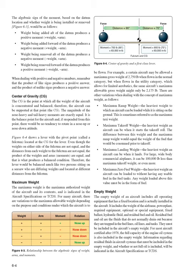Empty Weight: The empty weight of an aircraft includes all operating equipment that has a fixed location and is actually installed in the aircraft—the airframe, power plant, required equipment, optional equipment, fixed ballast, hydraulic fluid, and residual fuel and oil. Residual fuel and oil are fluids trapped in fuel lines, oil lines, and tanks. For most aircraft certified after 1978, the full capacity of the engine oil system is also included in the empty weight, as indicated in the aircraft specifications or TCDS.